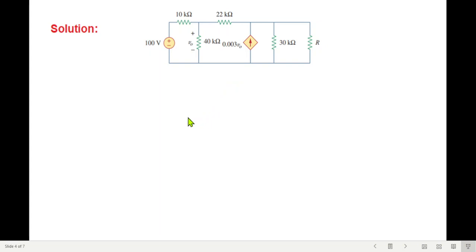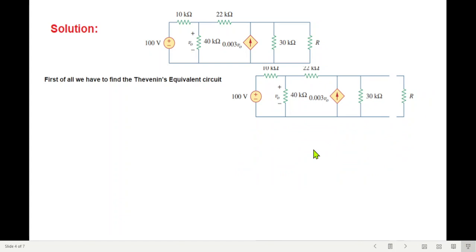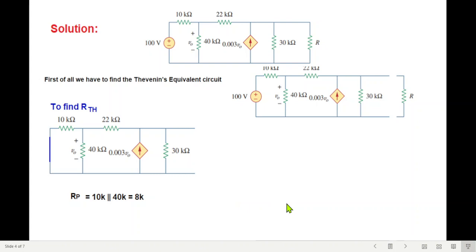The first step is that we have to find the Thevenin equivalent circuit. For that we have to remove the load resistance, and then we can find V Thevenin first and then R Thevenin or vice versa. So I'll follow this approach: we'll find R Thevenin first of all. I'm sure you remember that to find R Thevenin, we have to put the independent source equals to 0. This is the independent source, and to make it 0 we short circuit it. We don't touch the dependent source, it will remain like that. In this case I'll just slightly simplify this circuit by combining these two in parallel. Now there are three techniques of finding R Thevenin when the circuit has a dependent source like this.